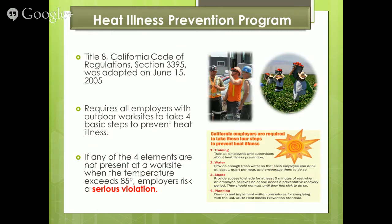In June of 2005, California adopted the code which pertains to the heat illness prevention program. It was mainly brought about due to the rash of heat-related deaths that were happening primarily in the agricultural industry. It basically requires all employers with outdoor work sites to take four basic steps to prevent heat illness: training for supervisors and employees about heat illness prevention, providing water and encouraging them to drink it, having access to shade for rest and recovery periods, and having a written heat illness prevention program. If any of these four elements are not present at a work site when the temperature hits 85 degrees, employers risk a serious violation by Cal OSHA.